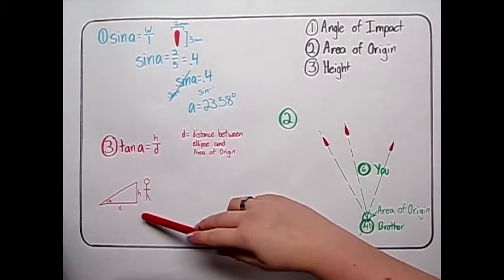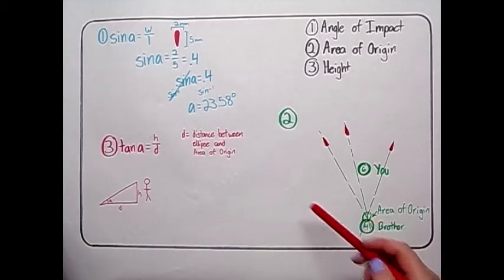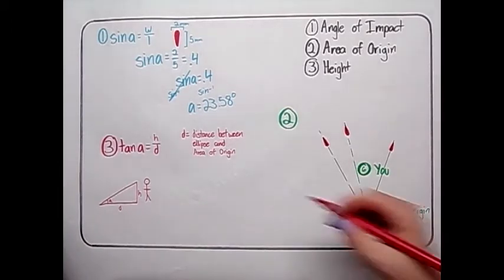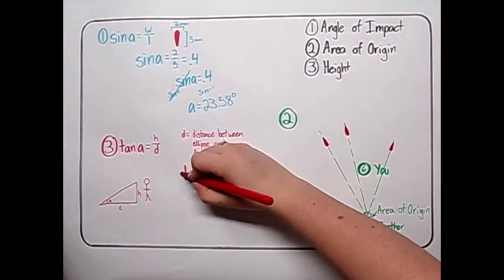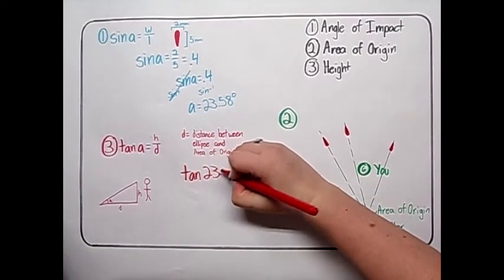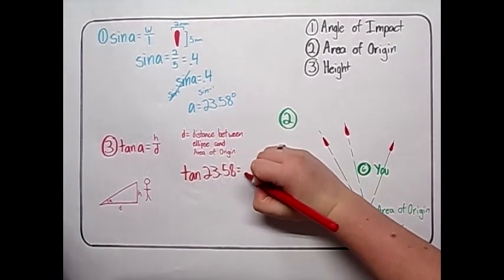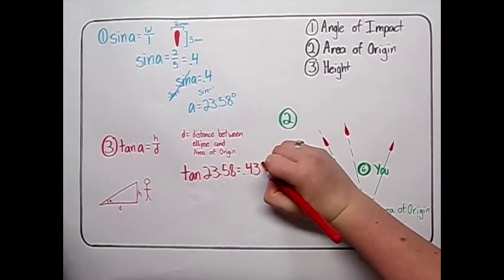In this step, we will find the height from which the cranberry sauce fell. You are 6 feet tall and your brother is 4 feet tall. We will use the equation tangent of A equals H divided by D. We know that angle A is 23.58, so the tangent of 23.58 is 0.436.